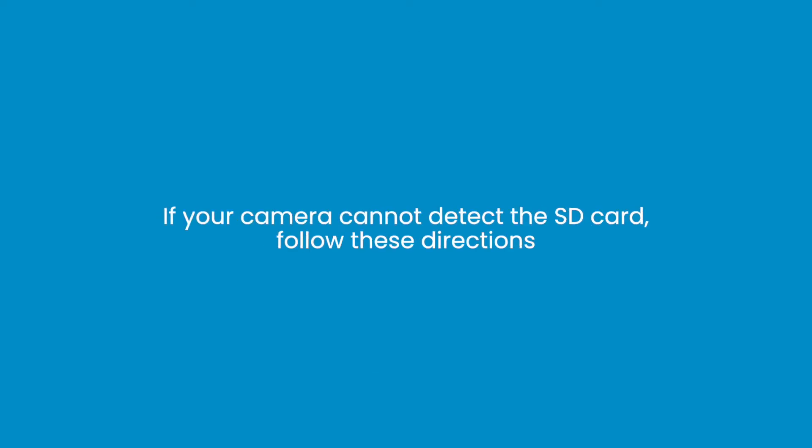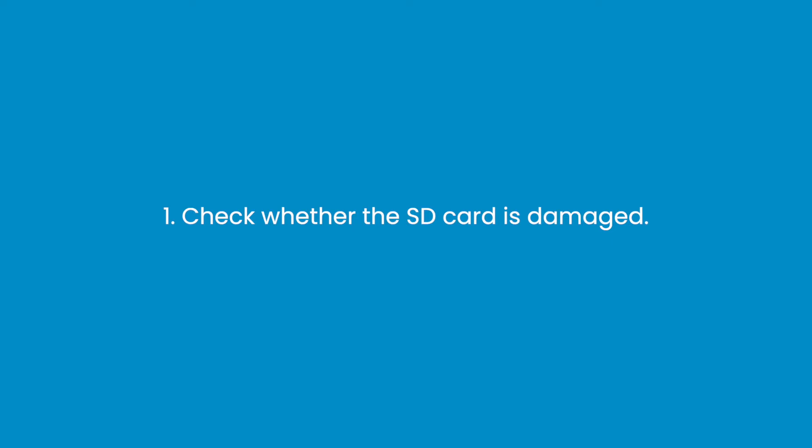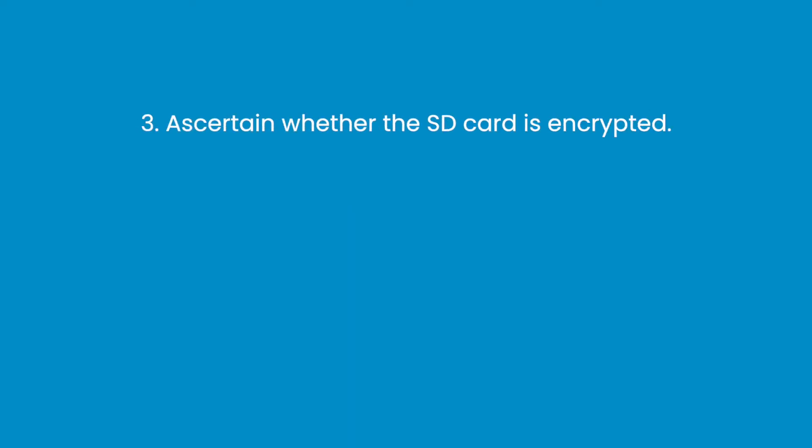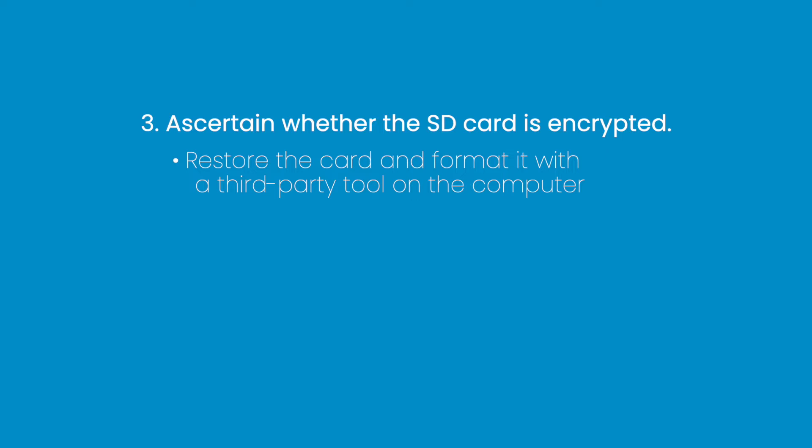If your camera cannot detect the SD card, follow these directions: 1. Check whether the SD card is damaged. If the SD card is undetected because of rust, wipe it. 2. Confirm the SD card format is correct — format it into FAT32 on a PC. 3. Ascertain whether the SD card is encrypted; restore the card and format it with a third-party tool on the computer before any use.